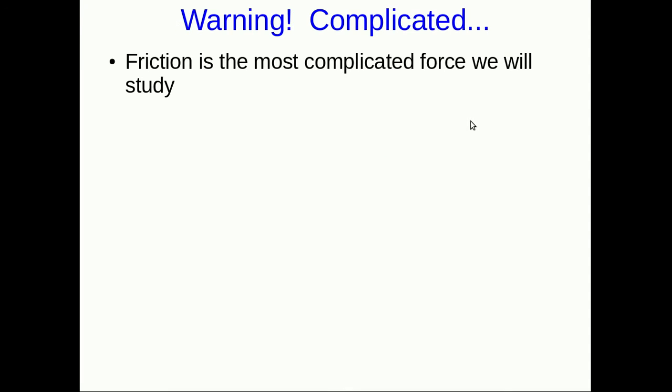Friction is really very poorly understood. There are a lot of people actively researching it, and there's a lot we don't understand about how to predict it, how to calculate it, and so on. We have some simple models that work a lot of the time. There are three types: kinetic, static, and rolling.